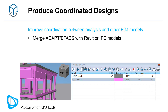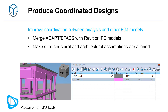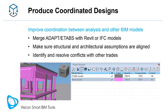It is easy to merge your ETABs or ADAPT models with other BIM models that are in Revit or IFC format. From an internal validation perspective, make sure your structural assumptions are still aligned with the Revit model you will use to produce construction documents.